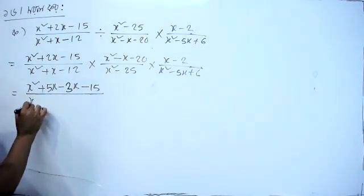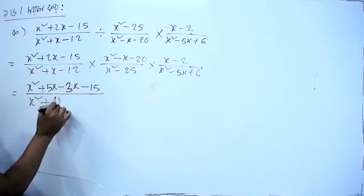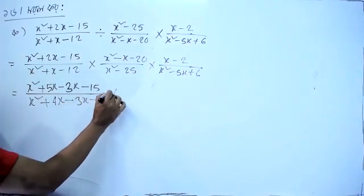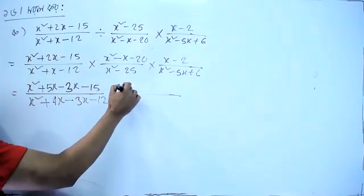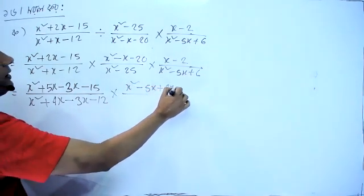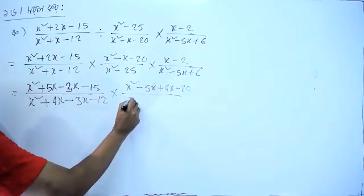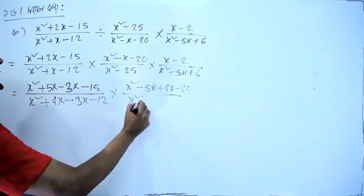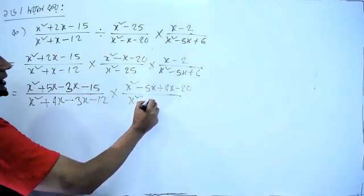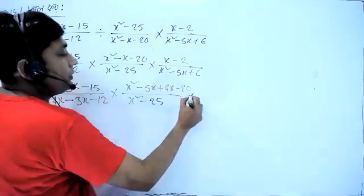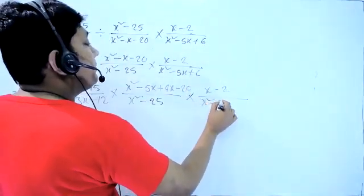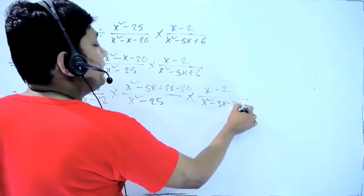x into x² - 5x + 4x - 20, and x square. x² + 5x - 2x - 3x.